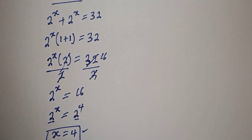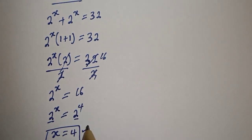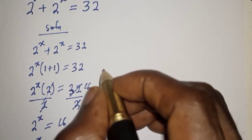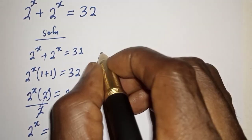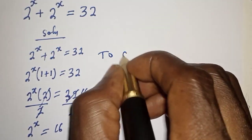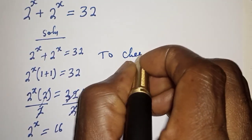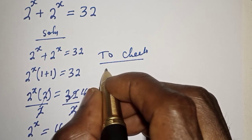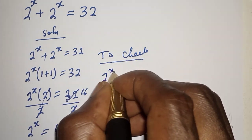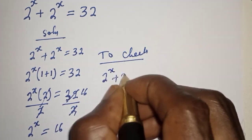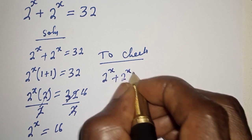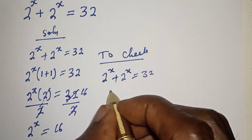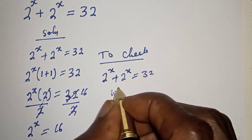We can check to confirm if our answer is right or wrong. We have the given equation: 2 raised to power s plus 2 raised to power s is equal to 32, when s is 4.